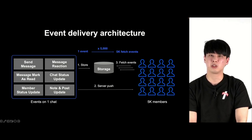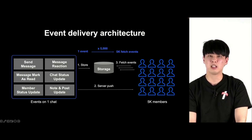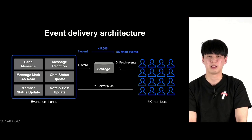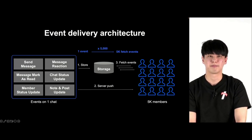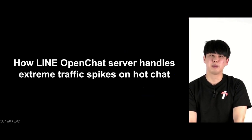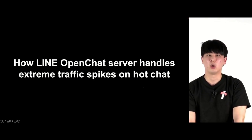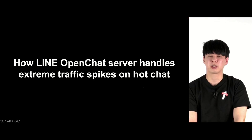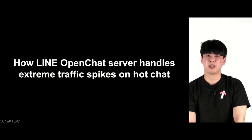In this event-based architecture, every time there is an event, it has to be sent to all users participating in the open chat. If there are 5,000 people in an open chat, every time an event is generated, it has to be sent to all 5,000 users — meaning 5,000 fetch event API requests are called. In a hot chat where tens of events are created every second, the API requests for fetch events surge significantly. Hot chat indicates the open chat service is growing exponentially, but it also poses a lot of technical challenges.